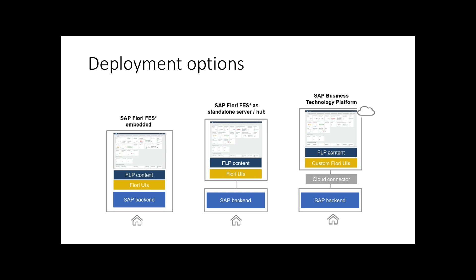Embedded model. In the embedded model, the Fiori front-end server is deployed into the ABAP application server of a backend system. All the required components are deployed in the same backend system. This model reduces the number of deployed systems, making them less complex to implement. This is the best approach if you have only one S4HANA or one ECC system and will not use Fiori for any other SAP on-premise systems.